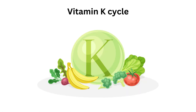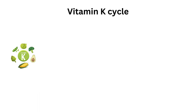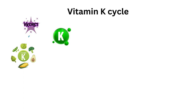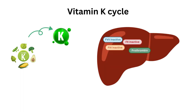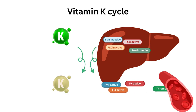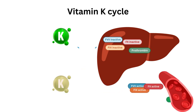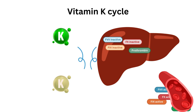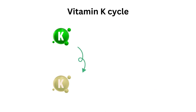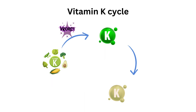Vitamin K is obtained through dietary sources such as green leafy vegetables. In the liver, vitamin K is activated by the VKORC1 enzyme. The activated vitamin K is necessary for the activation of clotting factors, which are then released into the bloodstream, where they form blood clots. This leaves us with inactivated vitamin K, which is then reactivated by VKORC1 and reused again — it's a cycle.